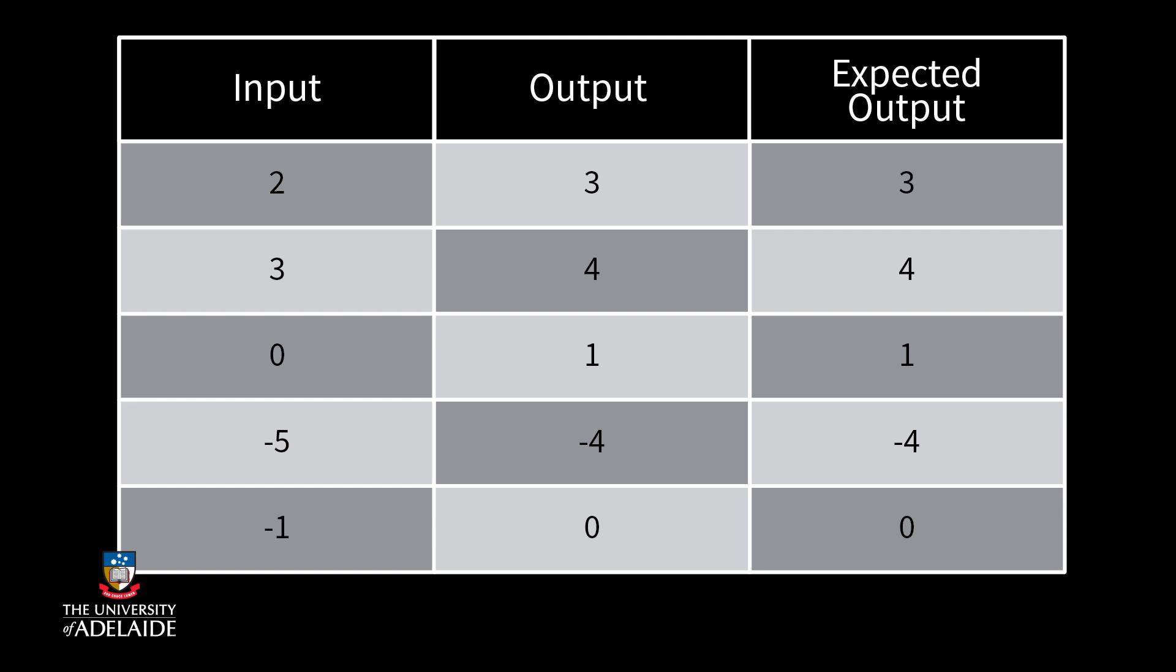For our example this means we only have to test a few positive numbers, the number 0 and then a few negative numbers. If we do then we will have confidence to say that our program is working as we expect it to.